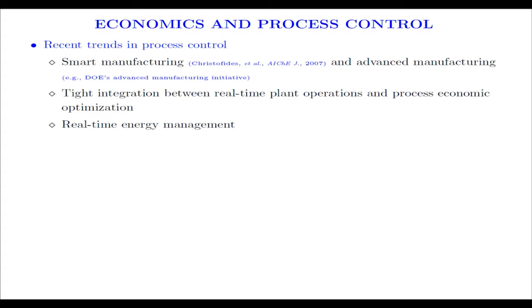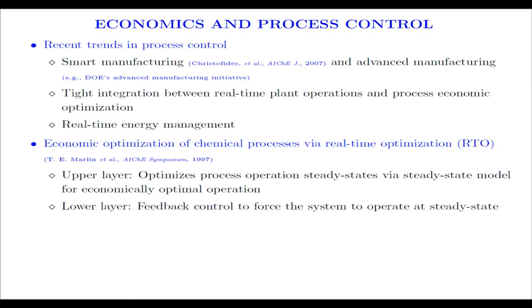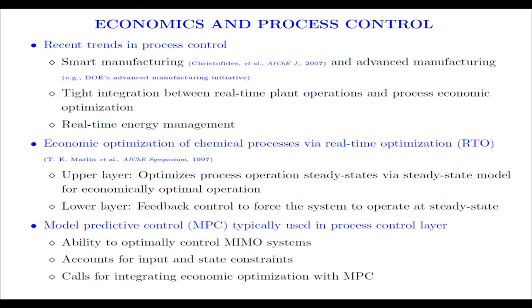Next generation manufacturing will feature a very tight integration between process operations, economics, and optimization. Specifically, within chemical process control, we're mainly focused on real-time energy management. The current paradigm to achieve this is a two-layer paradigm. In the upper layer, process economics are optimized over steady state process models. This computes economically optimal steady states that are used as targets in the lower process control layer to force the system to operate on these steady states.